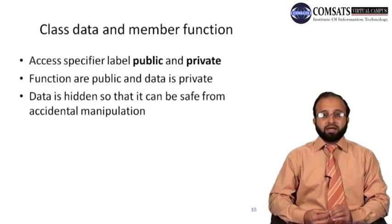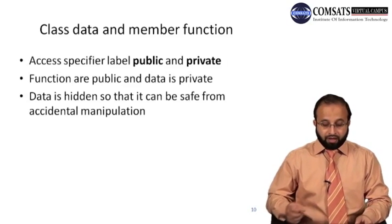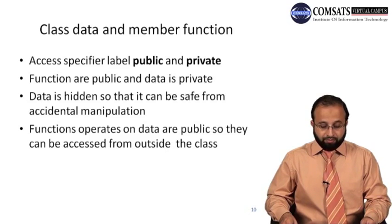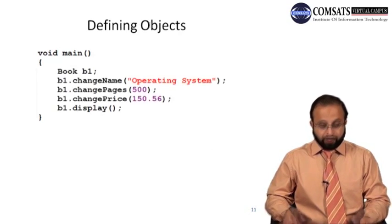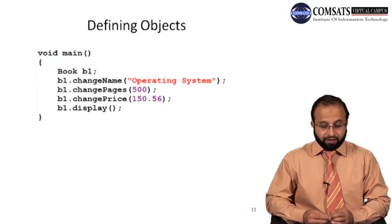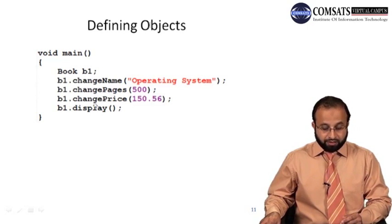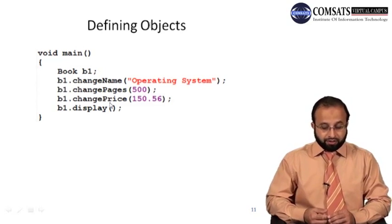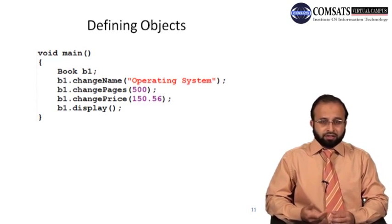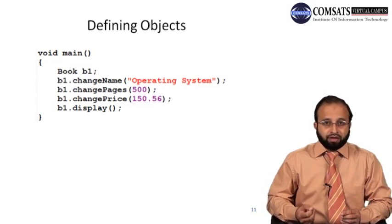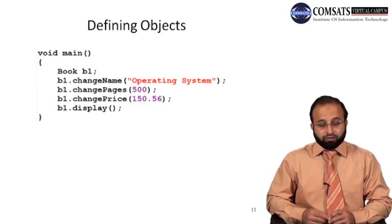Defining an object: we create 'Book b1' and call setName, setPages, setPrice. When 'Book b1' is declared, memory is allocated for that object with space for name, pages, and price. Then b1.setName is called — you pass the string and it copies into the name private data member of b1. Then b1.setPages(500) assigns 500 to pages of b1. Then b1.setPrice(150.56) assigns 150.56 to the price data member of b1. b1.display shows all those values.